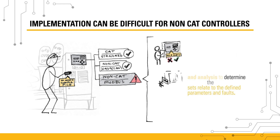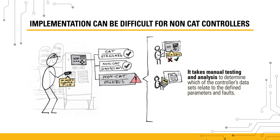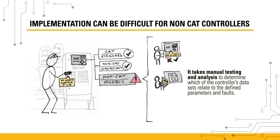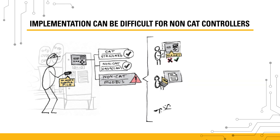Information about the controller's data sets isn't always available. Some companies that sell controllers make it difficult to find and decode their data sets because they want customers to use their service instead of coming to Caterpillar. So before we can do anything else, we need to translate and document the controller's non-standard language. Then we must do a lot of manual testing and analytics to figure out which dataset relates to the parameters and faults CAT systems use. All of this makes it more difficult to create the customized config file.